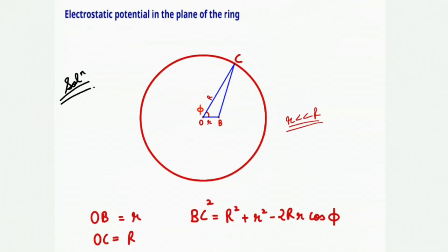In this video we will find the electrostatic potential in the plane of the charge ring. So here we have a charge ring with the charge per unit length equals to lambda, and we need to find the potential at point B.